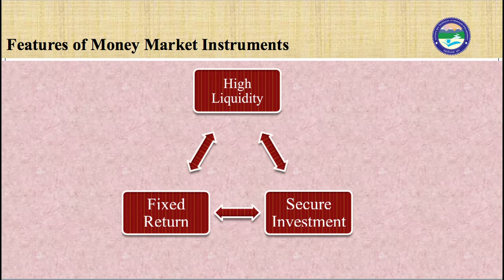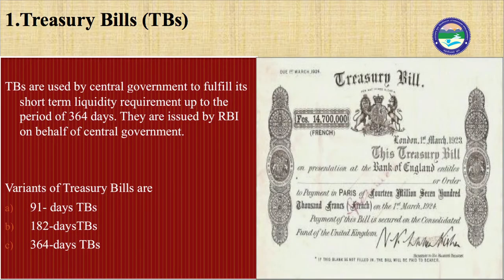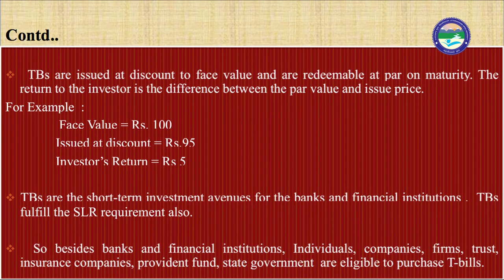The first money market instrument is treasury bills. Treasury bills are used by the central government to fulfill its short-term liquidity requirements up to a period of 364 days, and are issued by RBI on behalf of the central government. Five types of treasury bills were developed over time: 14-day intermediate treasury bills, 14-day auctionable treasury bills, 91-day treasury bills, 182-day treasury bills, and 364-day treasury bills. The first two variants were discontinued in 2001.